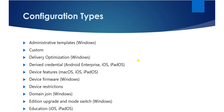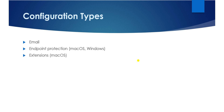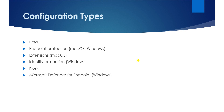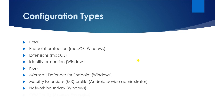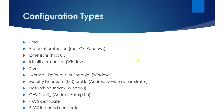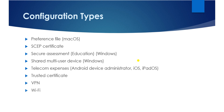These are the types of configurations available — it's a huge number. We have email, endpoint protection, extensions, identity protection, kiosk, Microsoft Defender for Windows, and more. You can also configure VPN, Wi-Fi, trusted certificate, and SCEP certificate. These are all the configuration profiles you can use in your Intune console.